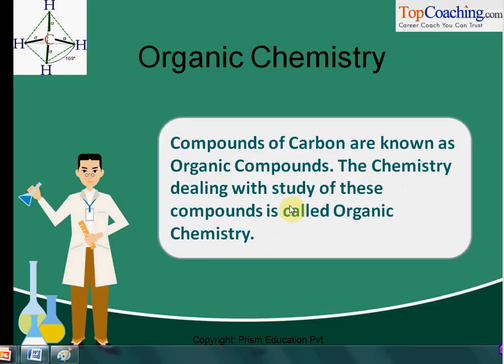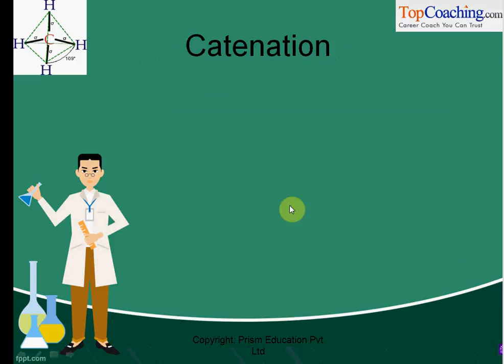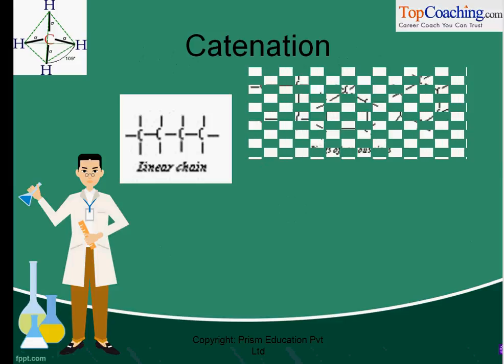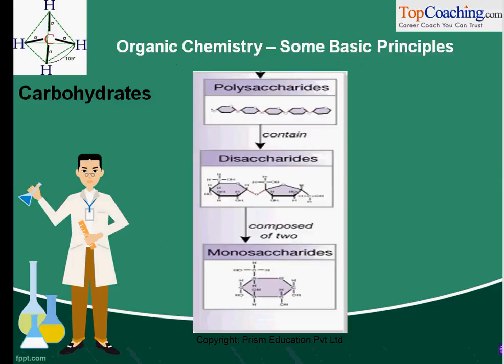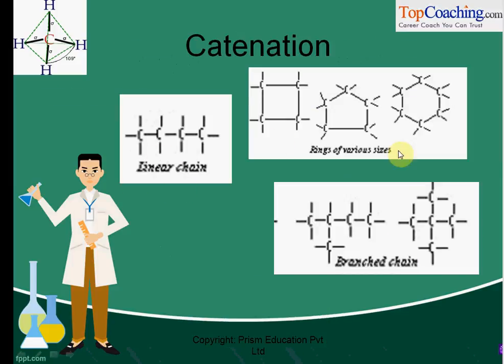The answer to that question is that carbon has a peculiar property known as catenation. Because of this property, we see a lot of chained compounds — this is a linear chain, this is a branched chain, and these are chains in ring shape. So carbon forms lots and lots of compounds due to this chain-making structure, and this property is called catenation.